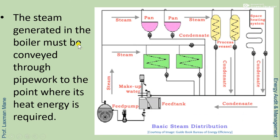The steam generated in the boiler must be conveyed through pipework to the point where its heat energy is required. Here is a system in which the boiler is the source of steam. From this, steam is given to different applications such as pan, process vessel, and space heating system. After use, steam is condensed and condensate is fed to the feed tank with makeup water, supplied through the feed pump to the boiler, and the cycle is completed.